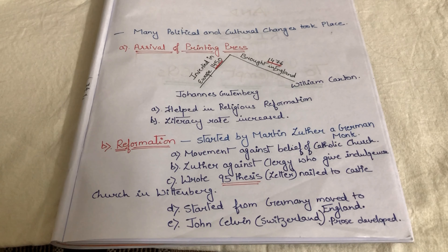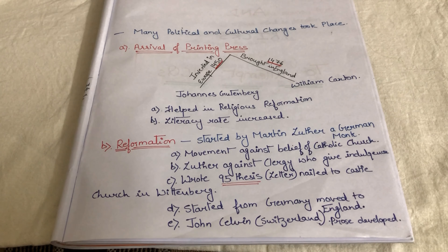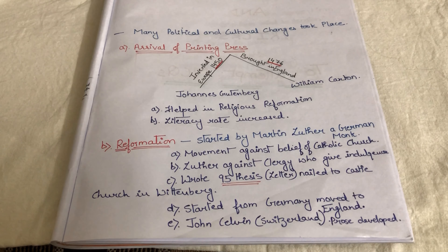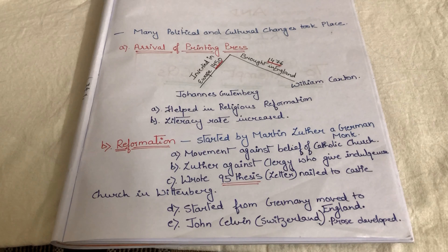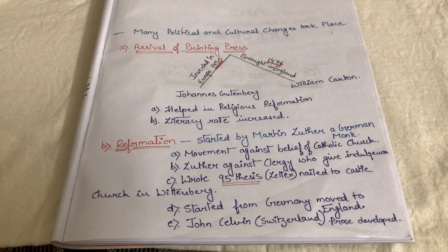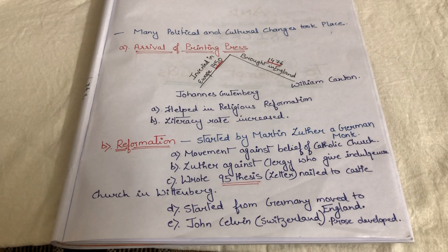When the Reformation Movement was going on in Germany, at the same time it was also happening in Switzerland, led by John Calvin. So when the movement started with Martin Luther in Germany, at the same time John Calvin led it in Switzerland, and eventually it came to England.